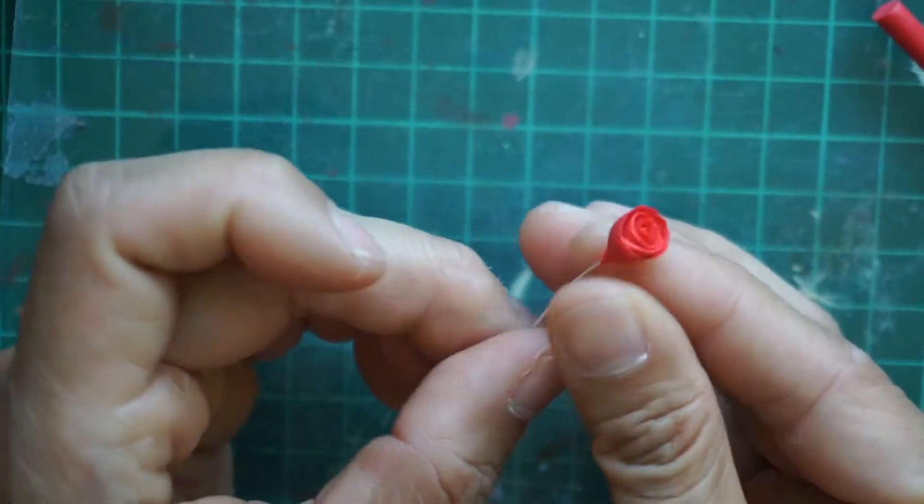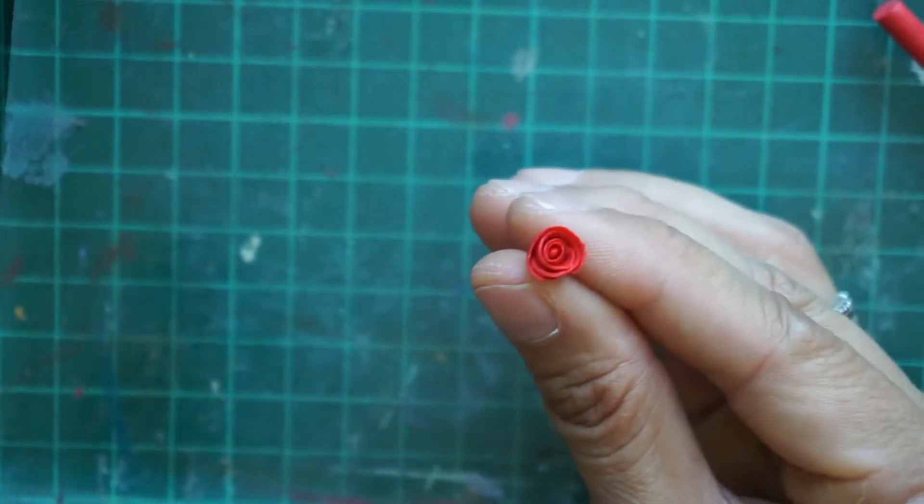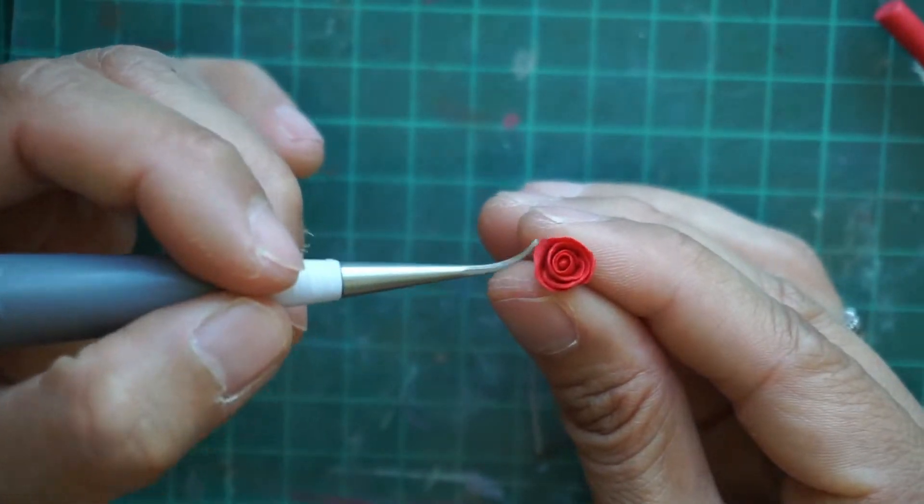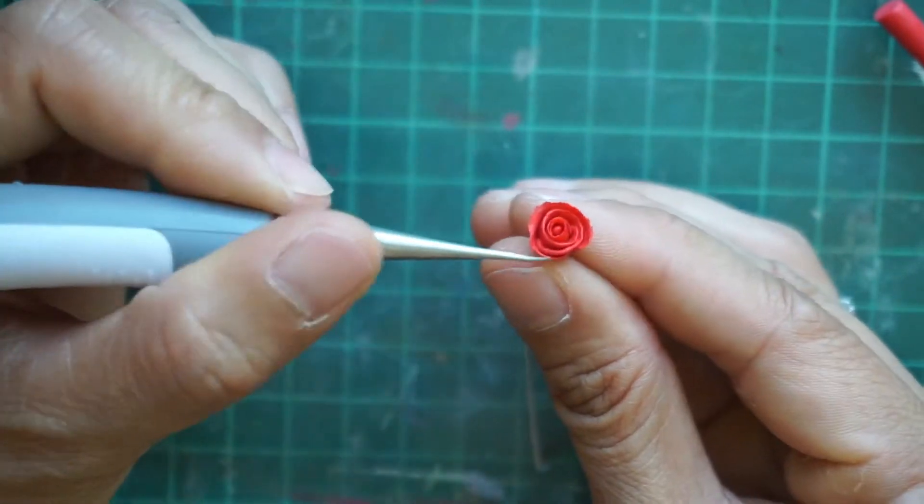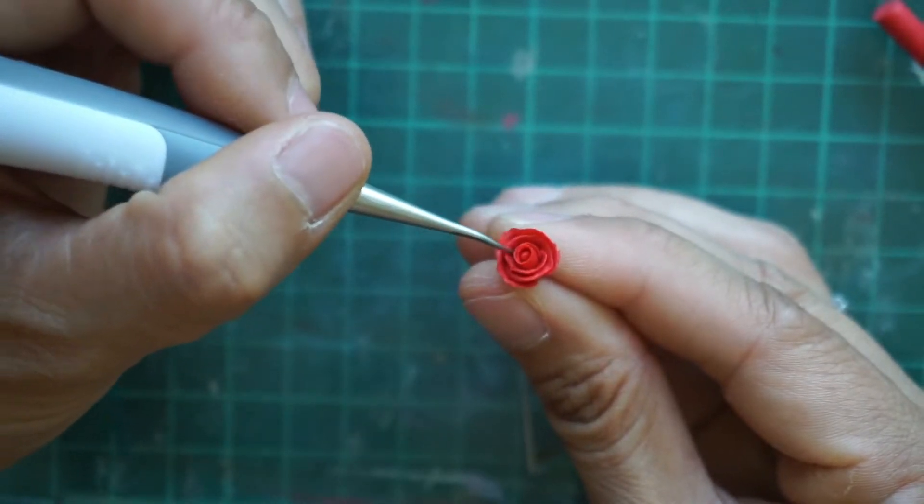After wrapping the petals, don't forget to pinch the bottom so that it will stick to the wire. Then separate the petals to open the flower and after that set it aside.